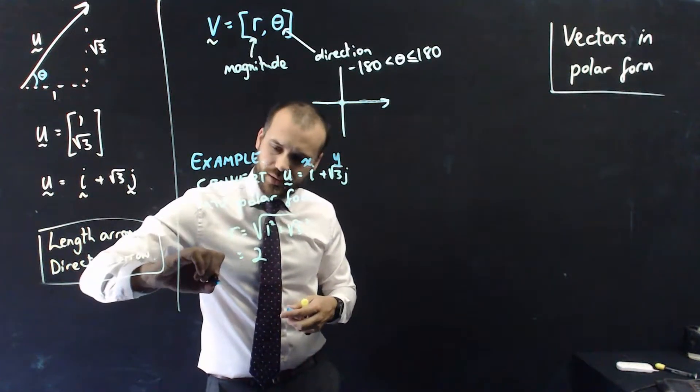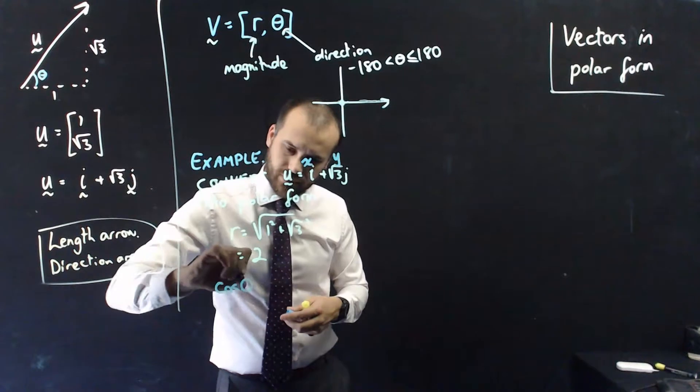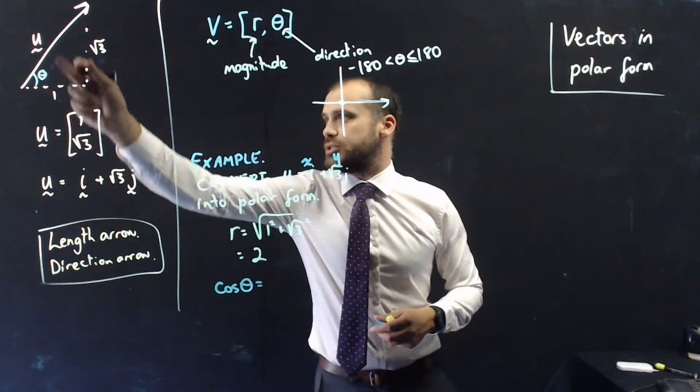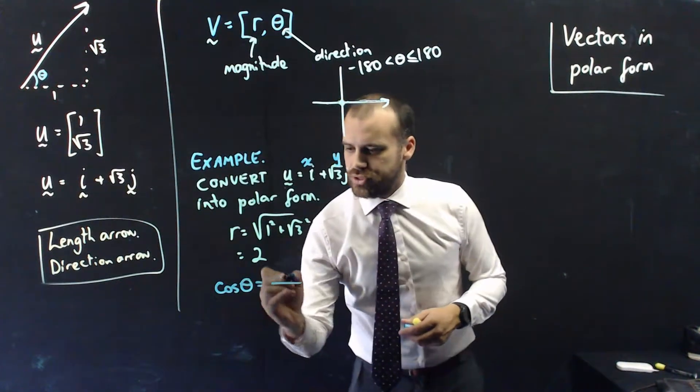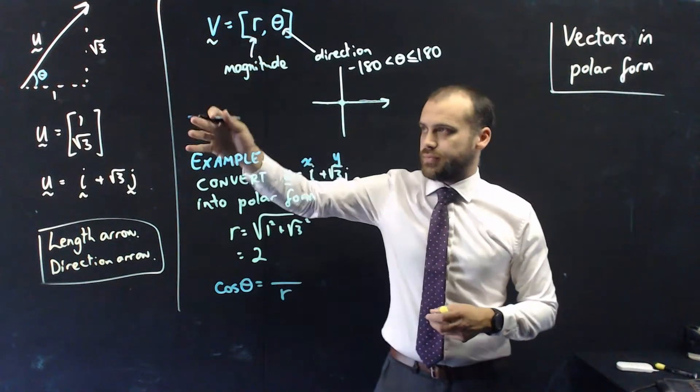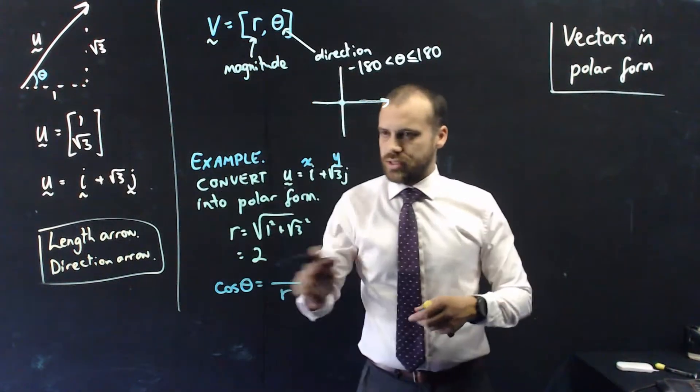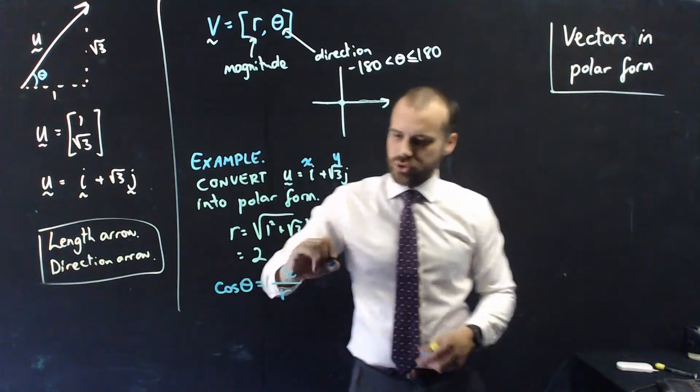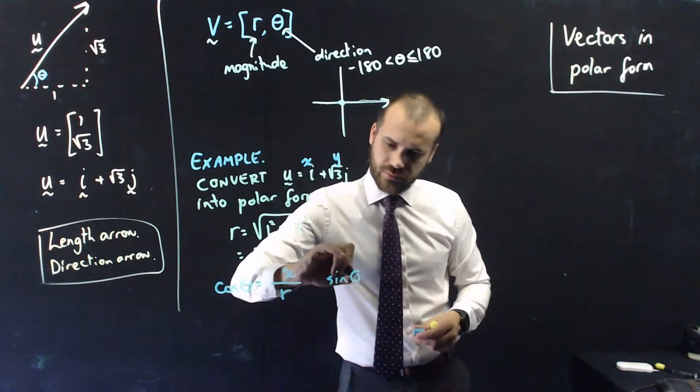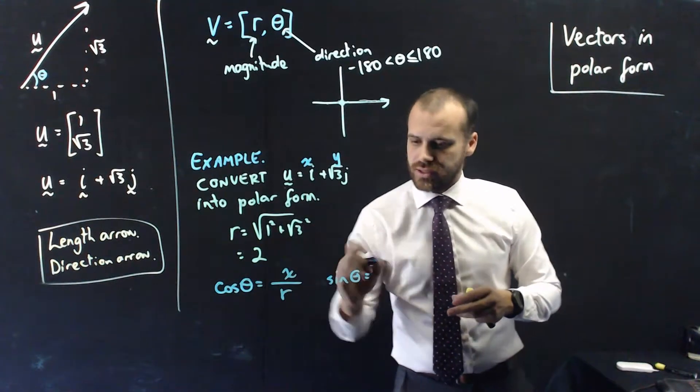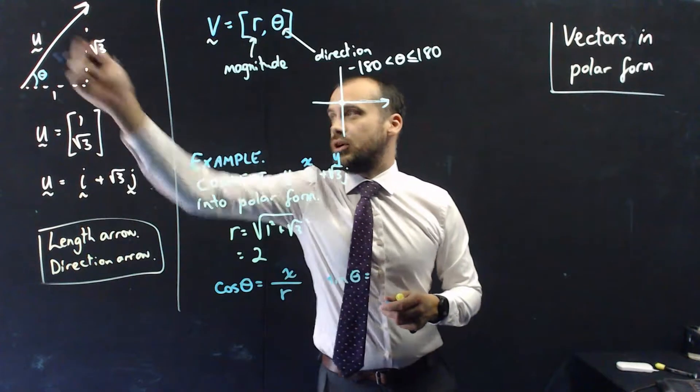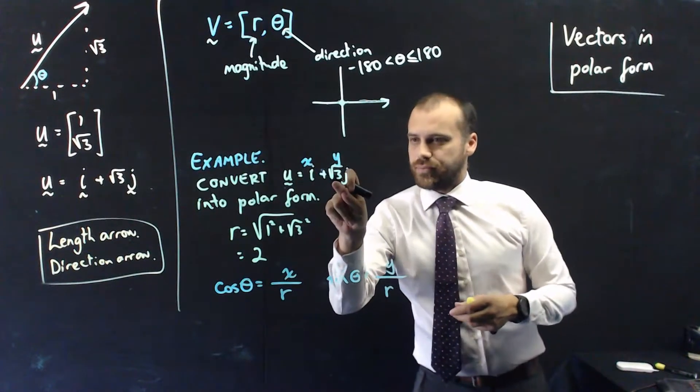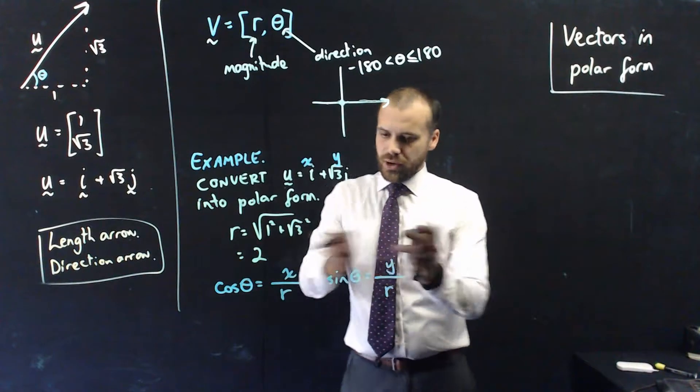So, we can say that cos theta equals adjacent over hypotenuse. So, the hypotenuse is easy, it's the length of the vector and the adjacent is that x value, so the x. Now, you can use that, but you could also use a different version, which will give you the same answer, sin theta is equal to opposite over hypotenuse. So, the opposite is that the coefficient of the j component. Alright, so, in both cases,